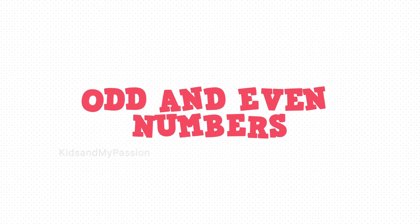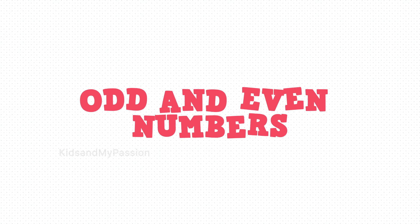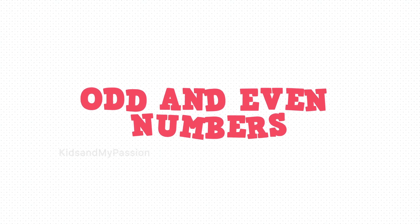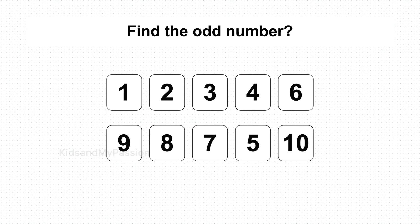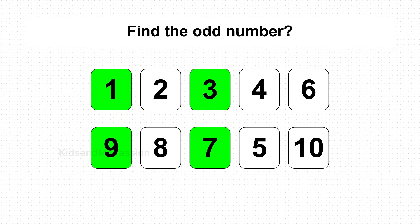Now let's see odd numbers and even numbers, kids. Find out the odd numbers: 1, 3, 9, 7, 5.